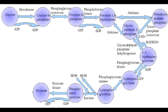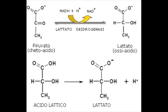What happens is that pyruvate inside the muscles is transformed into lactate, as you can see in this picture, by the lactate dehydrogenase. This enzyme takes its name from the reverse reaction, but it can work both ways.